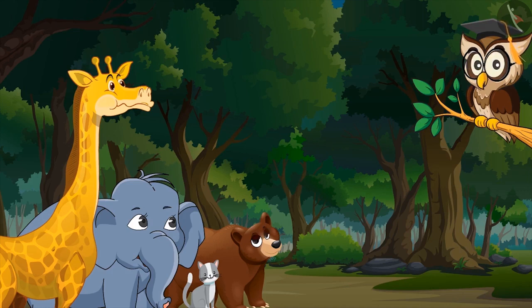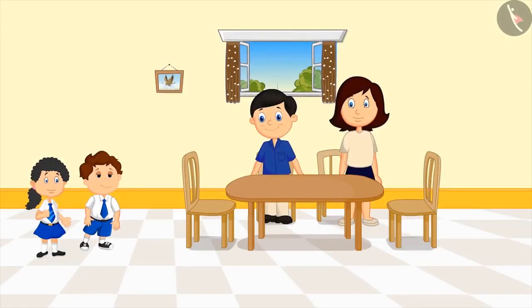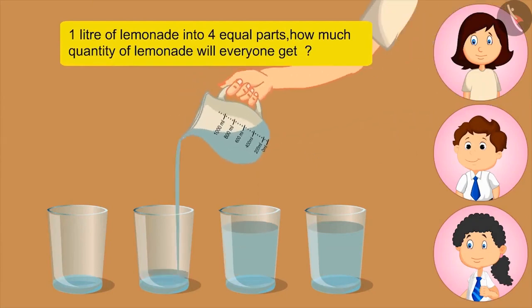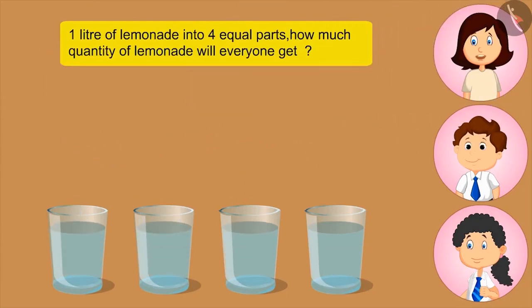I will recite a story to all of you. Pinky and Bholu live in the village with their parents. Pinky and Bholu got very thirsty while returning from school. Mom, I am very thirsty. Okay, I will make lemonade for everyone. We will also help you in making lemonade. Mother makes one liter of lemonade with the help of Bholu and Pinky and fills it in four glasses. Now, tell me, if I divide one liter of lemonade into four equal parts, how much lemonade will everyone get?